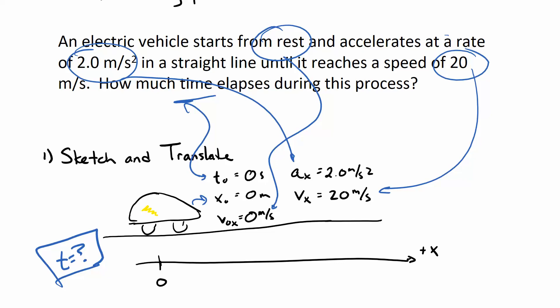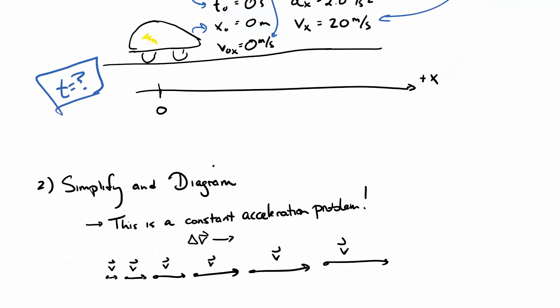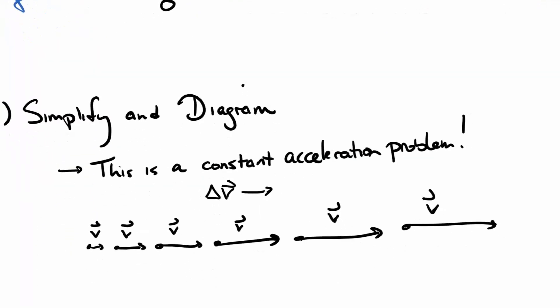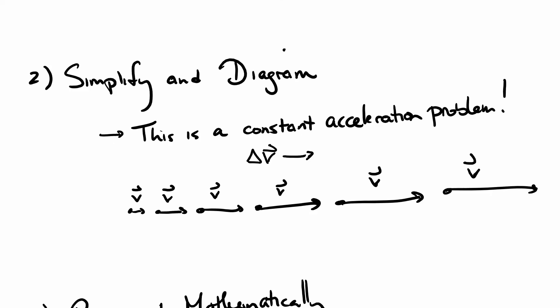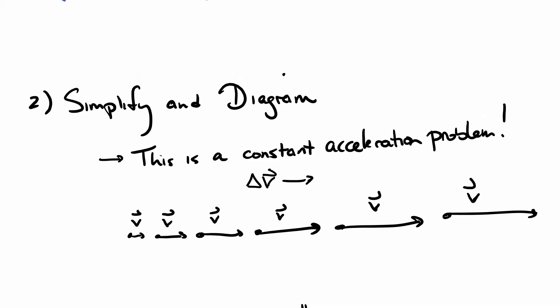Having pulled all this out, I want to now start putting some of our skills to use in diagramming this. I want to simplify it. I notice it's a constant acceleration problem. And I can represent the motion with a motion diagram like this, where it's speeding up. The velocity is getting larger at every time interval because there's a constant acceleration.